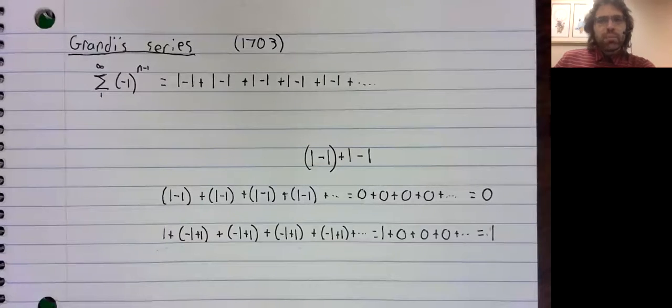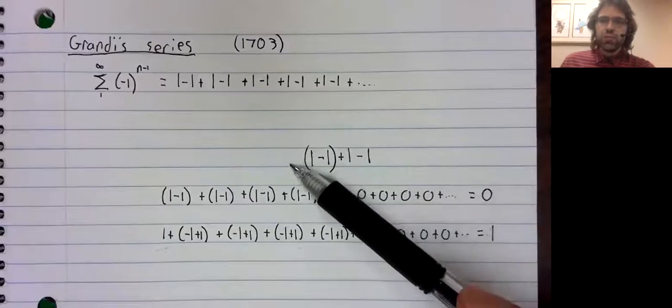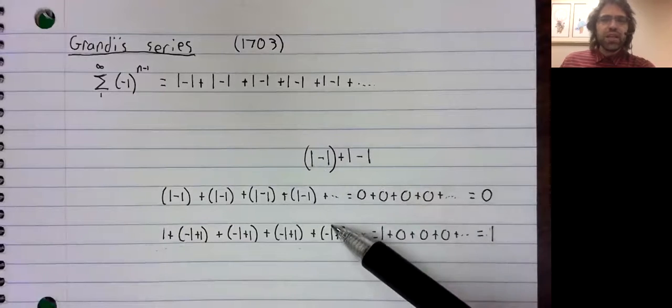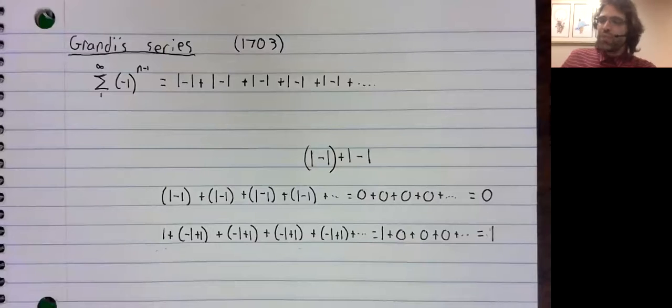Looking back at this, we would say that what's going wrong is that we're treating infinite sums like finite sums. Just because finite addition is associative and we can put parentheses in doesn't mean that infinite addition has that property. So there was a, relatively great I suppose, dispute over what this sum should equal.